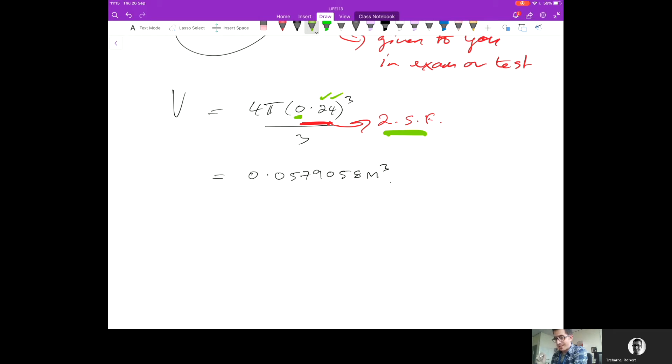With numbers less than one, you can ignore any zeros that come after the point before the first digit. Then the first two significant figures, the first two figures that mean anything, are the five and the seven in this case. Because that's a nine, I'm going to round this to an eight and ignore the rest.